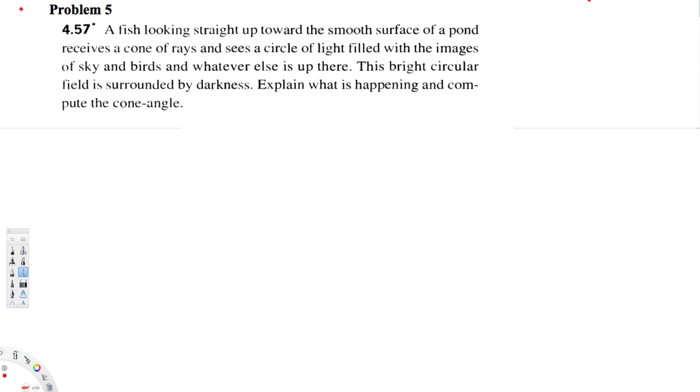What's going on guys, let's try this problem right here. This question is asking: a fish looking straight up toward the smooth surface of a pond receives a cone of rays and sees a circle of light filled with the images of sky and birds and whatever else is up there. This bright circular field is surrounded by darkness. Explain what is happening and compute the cone angle. Let's draw a diagram for this one.